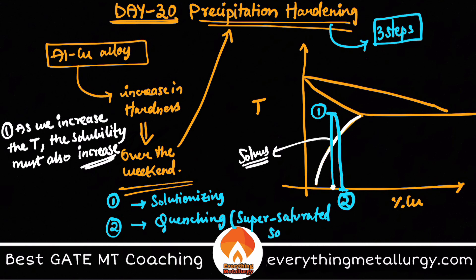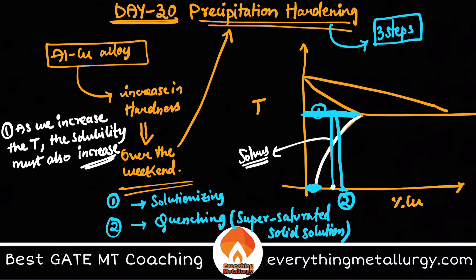Because of quenching, a supersaturated solid solution forms. At room temperature only a limited amount of copper can dissolve in aluminum, but because we heated to the high temperature in the first step we had more copper in solution. As we quench down, it should revert to the lower level, but because there is no sufficient time, there is excess copper remaining in the microstructure — that is the supersaturated solid solution.